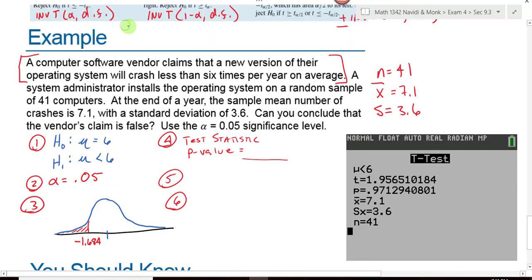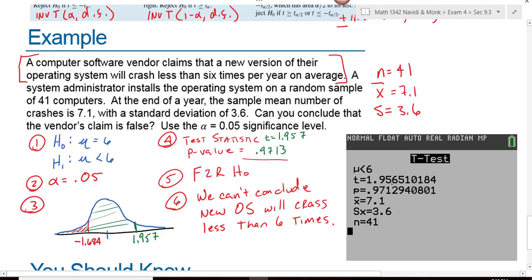There's our output. What is my test statistic? T is equal to 1.957. Z scores go to 2. T scores actually use 3 decimals. What's my p-value for this problem? 0.9713. My test statistic is way over here. This was a left tail test. My p-value is all this area over here. It's huge. Clearly, I will do what? I'll fail to reject the null hypothesis. So my conclusion is, we can't conclude that the new version of operating system will crash less than 6 times a year. I would say his claim is false because I could not prove that it was true.